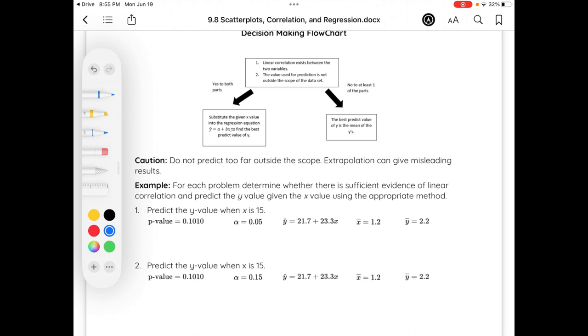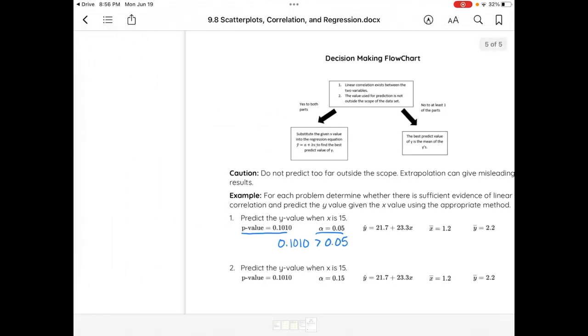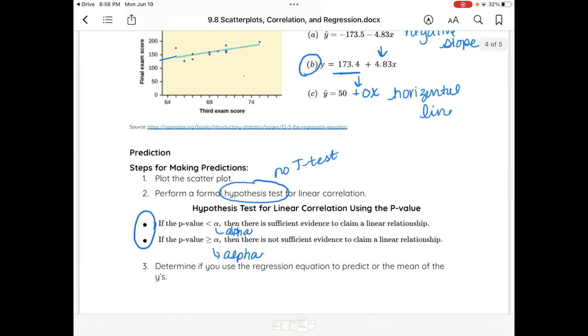For each problem, determine whether there is sufficient evidence of linear correlation and predict the y value when it's given. So, I'm going to look for my p-value and my alpha value and then I'm going to compare them. My p-value of 0.1010 is greater than 0.05. So, on our previous page, if it was greater than our alpha, there is not sufficient evidence.